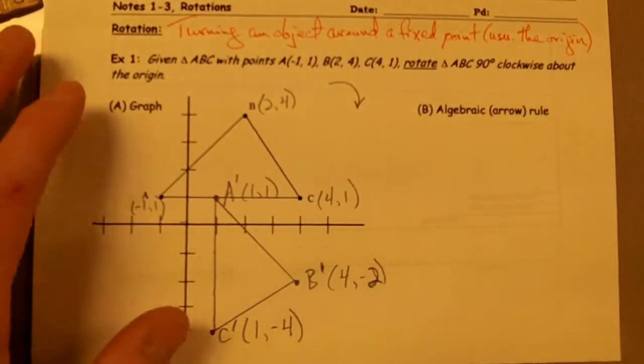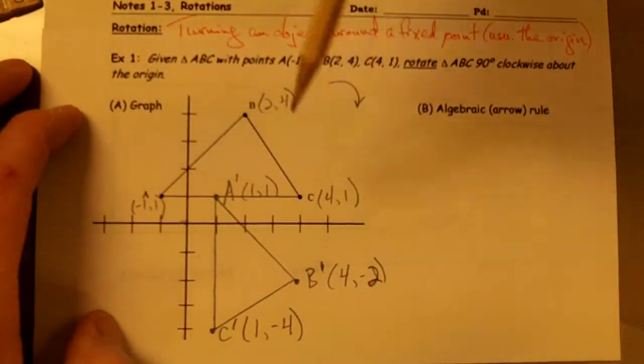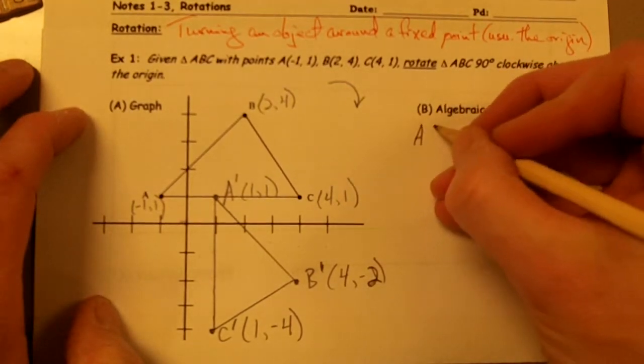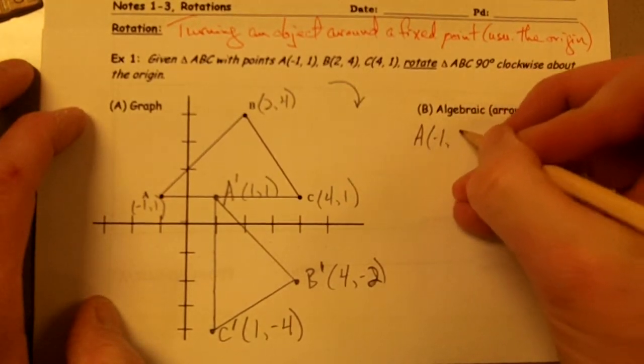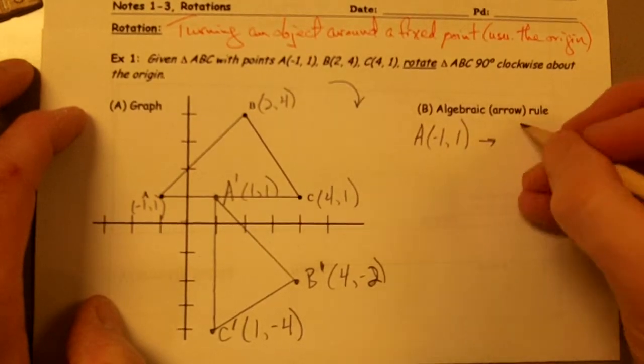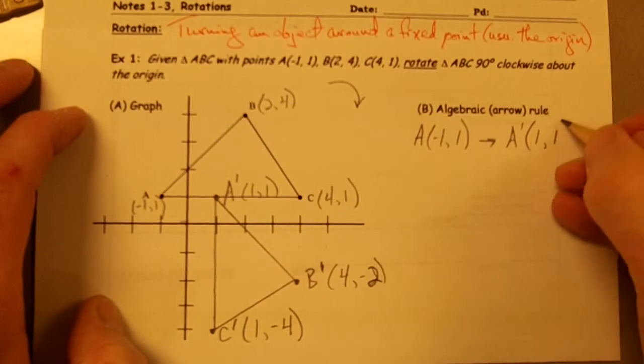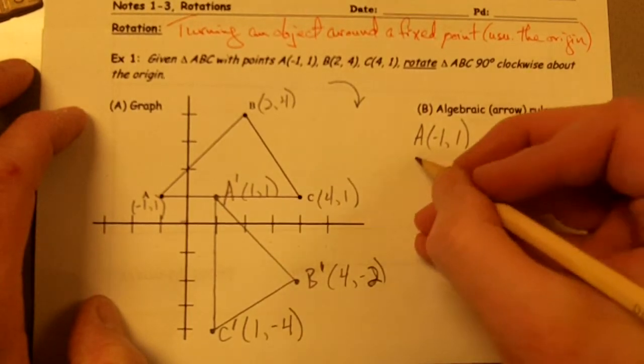Now I would like to come up with the algebraic rule for this particular rotation. So let me see, point A, which was (-1, 1), that rotated to point A prime, and A prime is (1, 1).